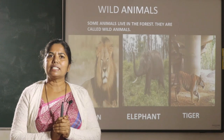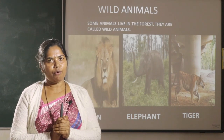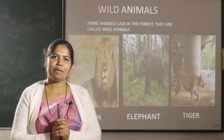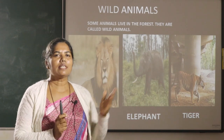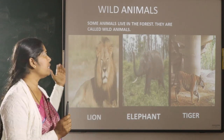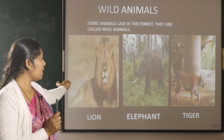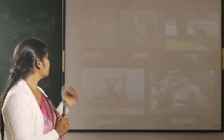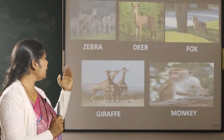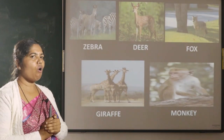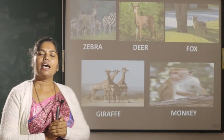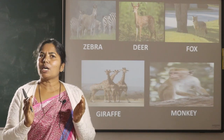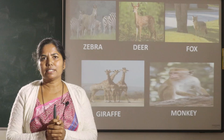Some animals live in the forest. They are called wild animals. Some of the animals are a lion, elephant, tiger, zebra, deer, fox, giraffes and monkey. These animals are called wild animals.